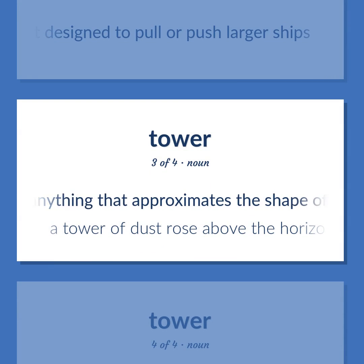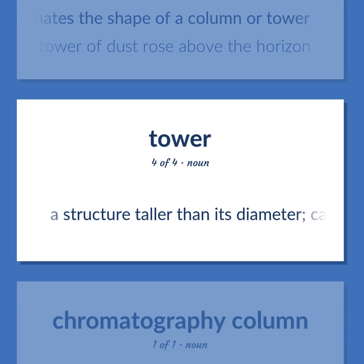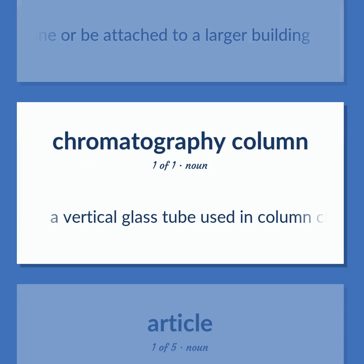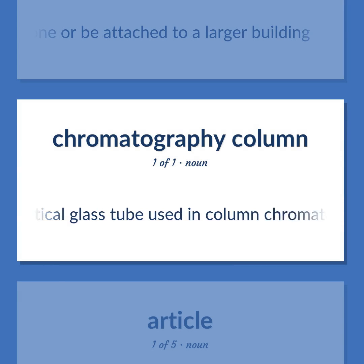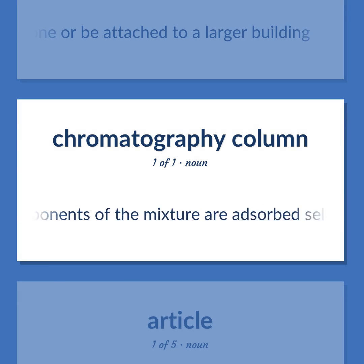Tower: Anything that approximates the shape of a column or tower. Example: A tower of dust rose above the horizon. A structure taller than its diameter; can stand alone or be attached to a larger building. A vertical glass tube used in column chromatography — a mixture is poured in the top and washed through a stationary substance where components are absorbed selectively to form colored bands.